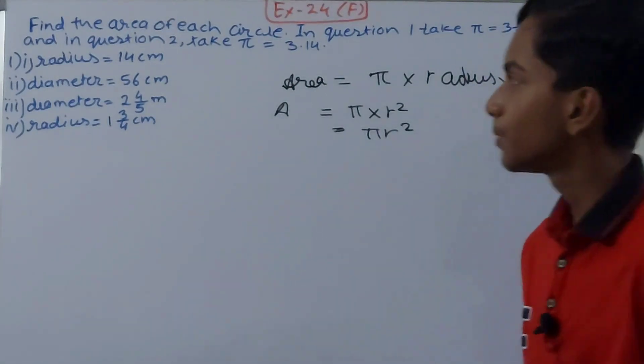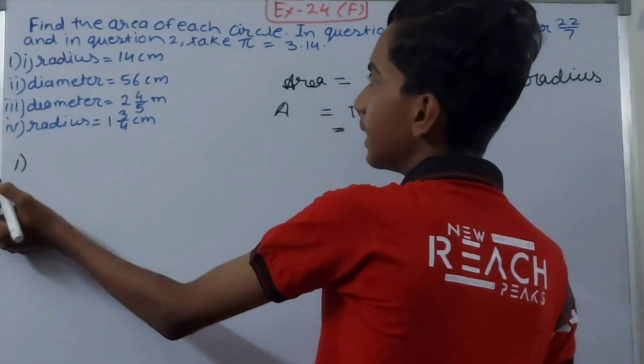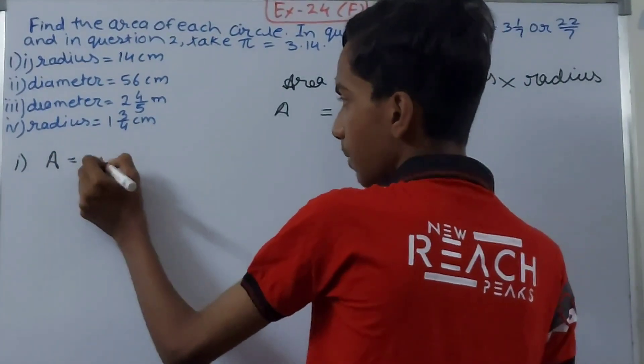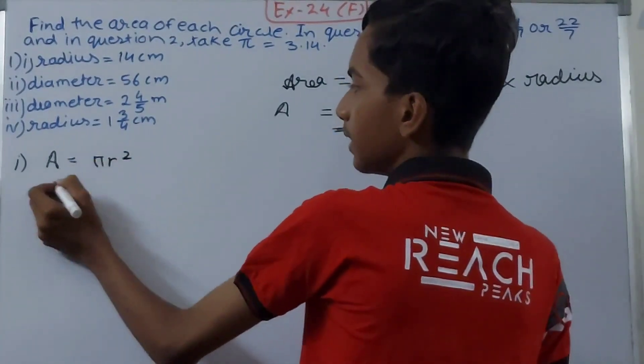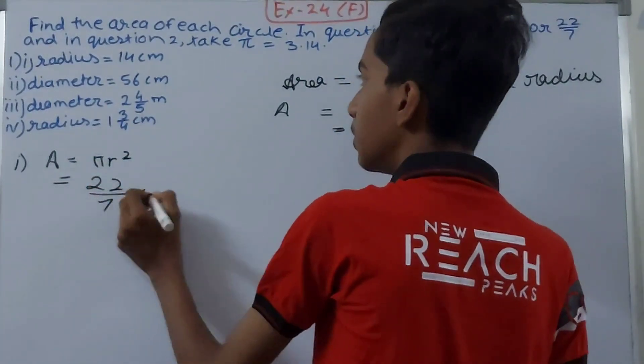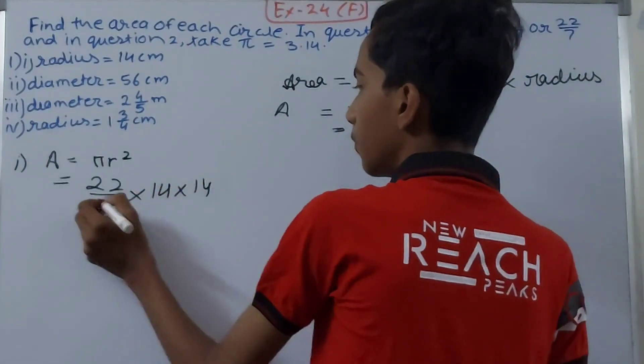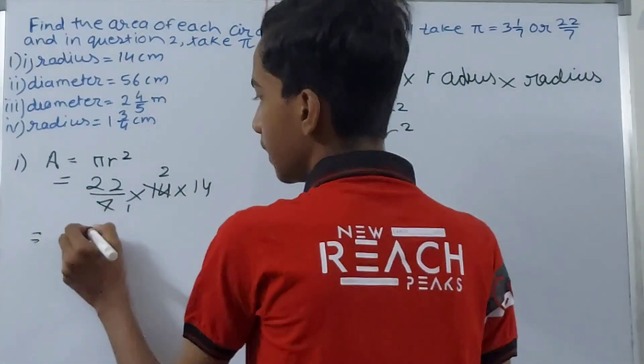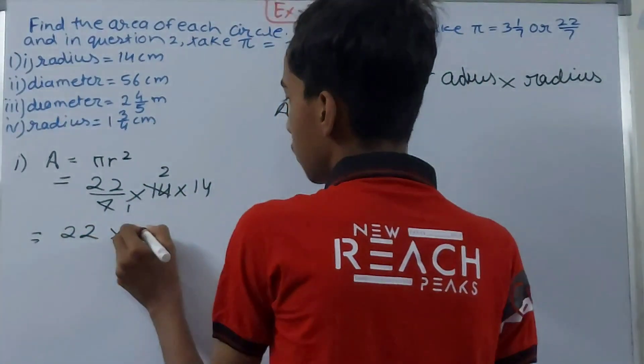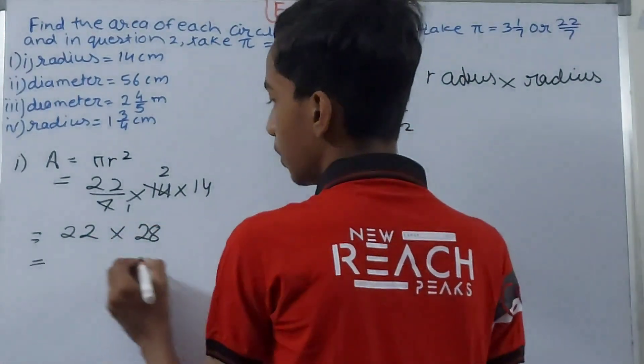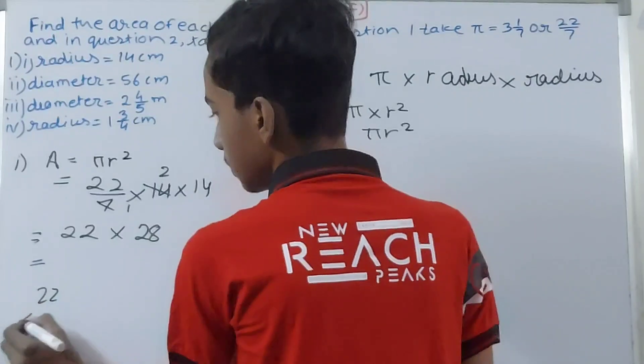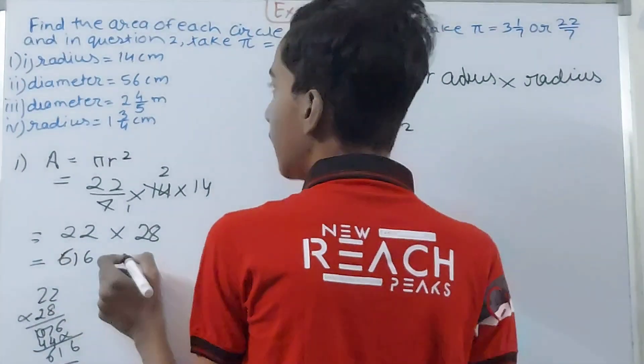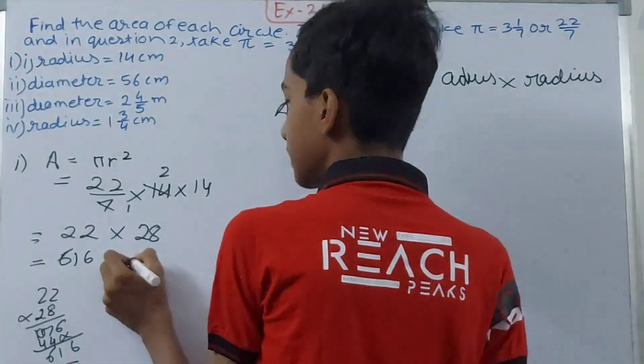In the first part, the radius is already given, that is 14 centimeters. So area equals to πr², which is 22/7 into 14 into 14. Cancel this, that will become 22 into 28, which is 616 cm². This becomes the area in the first one.